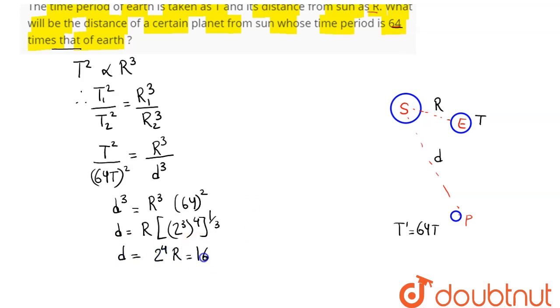that is 16R. That is, the distance will be 16 times that between the sun and the Earth. Hence 16R is our answer.